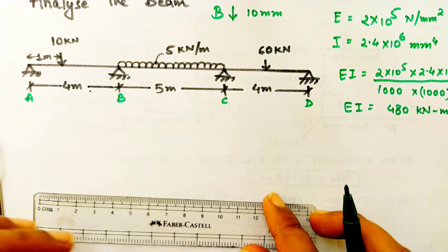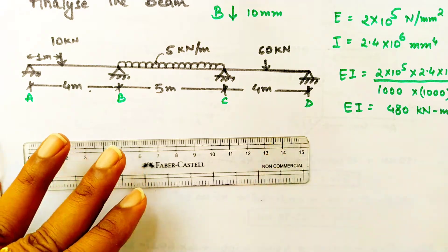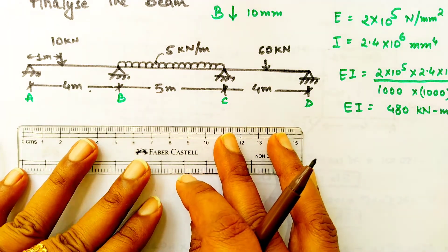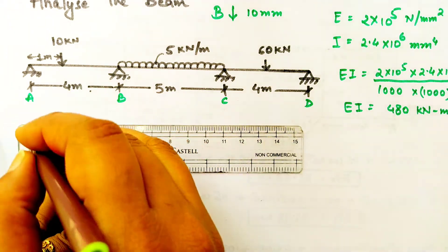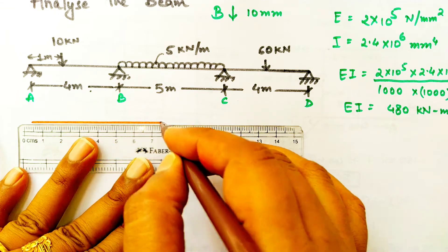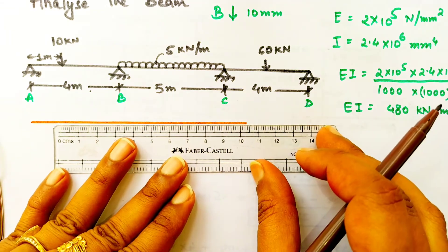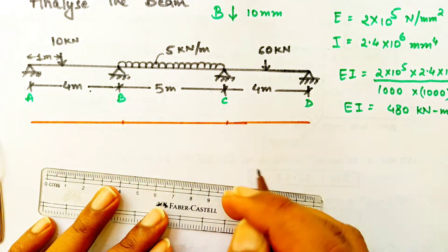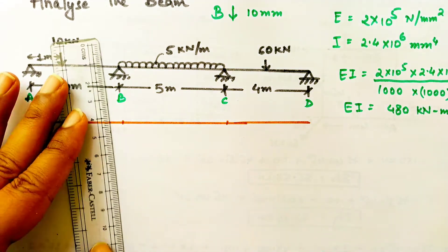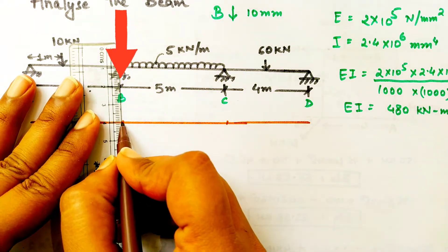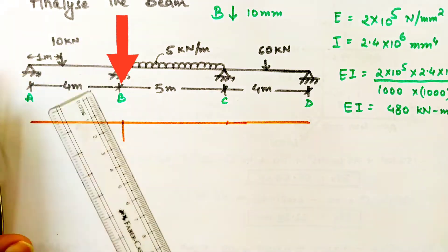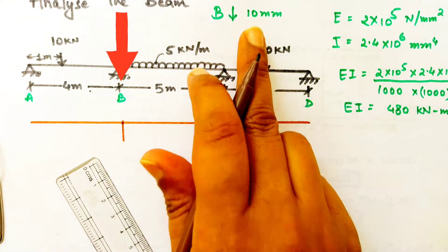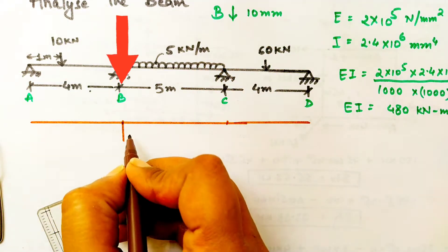Nothing will be going on the CD panel. On the extreme ends we are having simple supports and all the intermediate joints are partially fixed or semi-fixed joints. This B support is sinking by 10 mm, which means 0.01 meters.